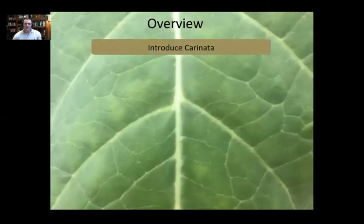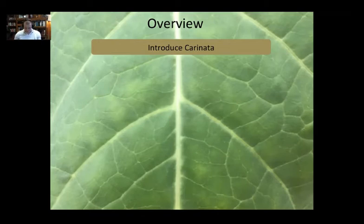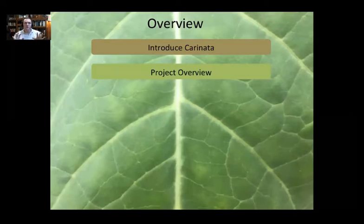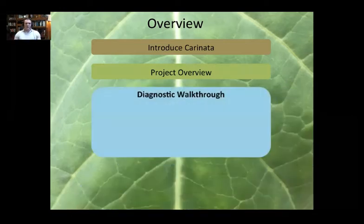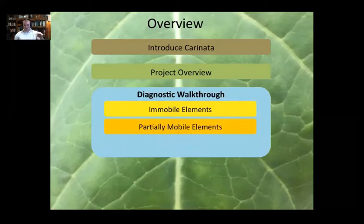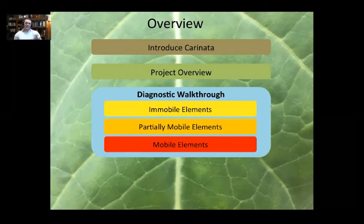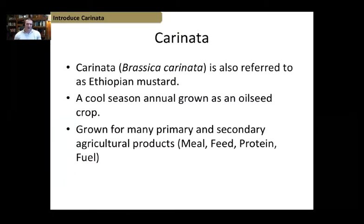For an overview, we're going to introduce Carinata for those who may not be as familiar with the crop, then move to a project overview so you can understand how we got this symptomology. Then we'll go through a diagnostic overview split into three parts: the immobile elements, partial mobile elements, and mobile elements. In the upper left-hand corner, you'll see a banner to help you keep track of where we are in the presentation.